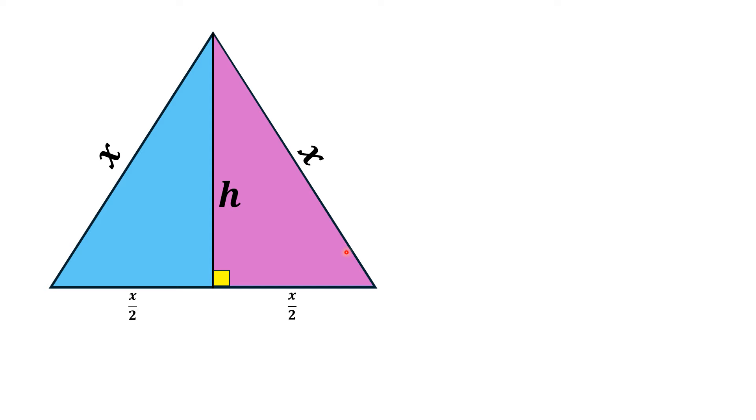We consider this right triangle and use the Pythagorean theorem on it. The legs of this right triangle are h and x/2, while the hypotenuse is x. So x² = h² + (x/2)², which implies x² = h² + x²/4.